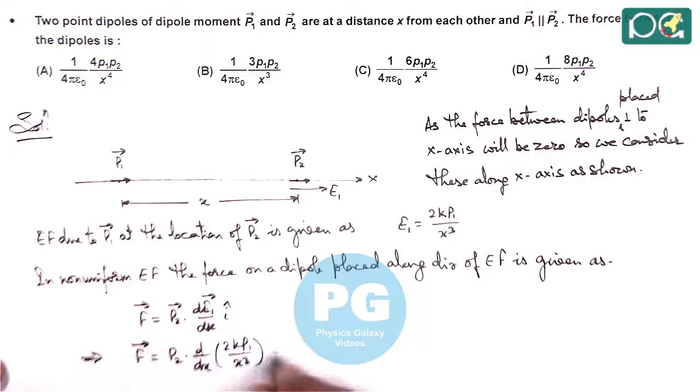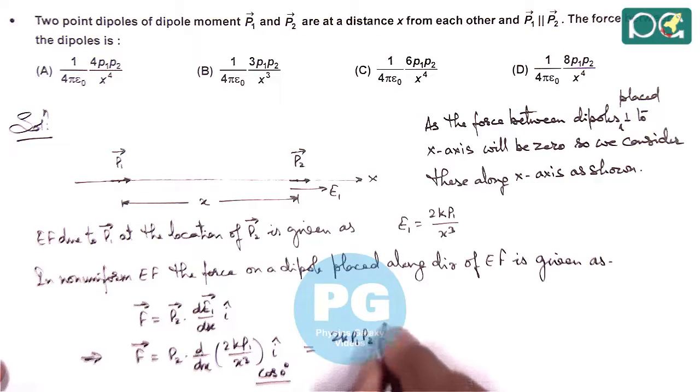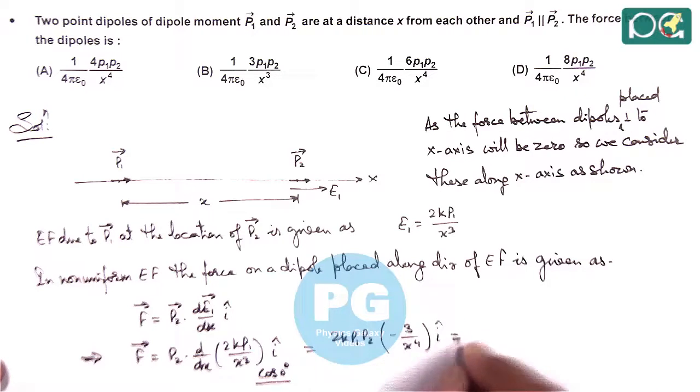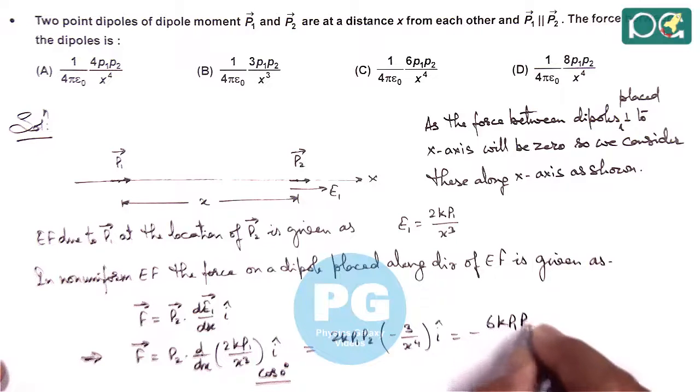Vectorially if you wish to write, you can write i cap and cosine zero degree will result in unity. This gives 2kp1p2 times 1 by x cube. When we differentiate, this gives minus 3 by x to power 4 i cap. So this is giving us minus 6kp1p2 by x to power 4 i cap.